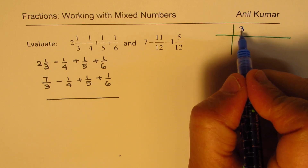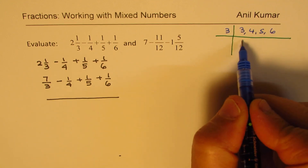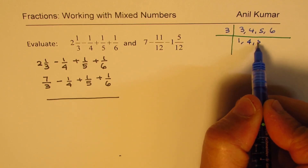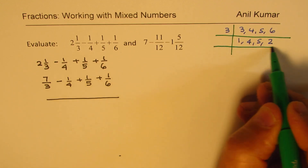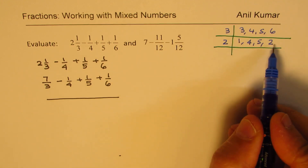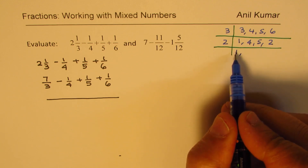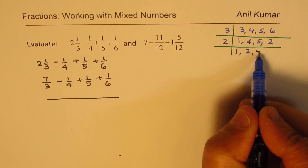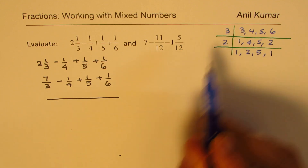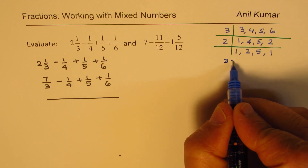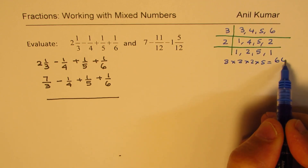So we have these numbers: 3, 4, 5, and 6. We divide by 3 — it goes into 3 once and into 6 twice; 4 and 5 are left as-is. Then we divide by 2, since 4 and 2 share a common factor. 4 divided by 2 is 2; 5 cannot be divided so write 5; 2 divided by 2 is 1. Multiplying all the divisors gives the LCD: 2 × 3 × 2 × 2 × 5.